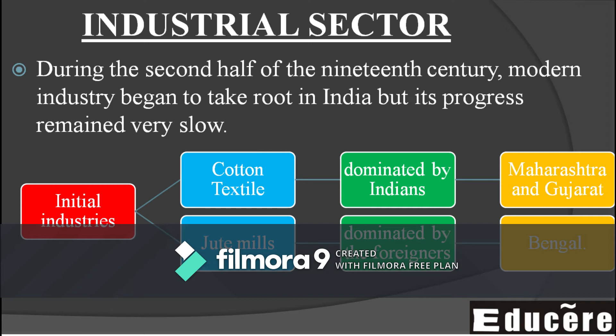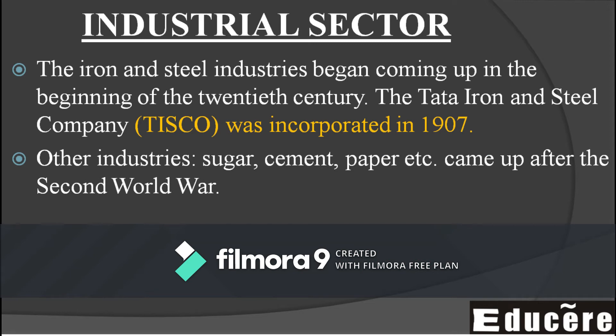The jute mills were represented and owned by foreigners — basically the British. Towards the end of the 19th century and into the 20th century, the cotton and jute industries developed. Then around the start of the 20th century, the important iron and steel industries came — the iron and steel industry, known as TISCO: Tata Iron and Steel Company.